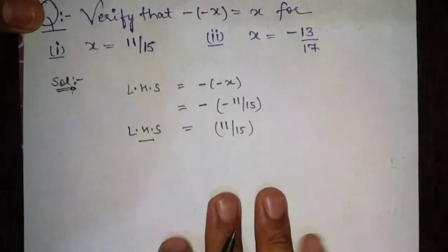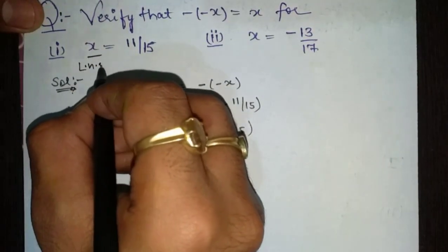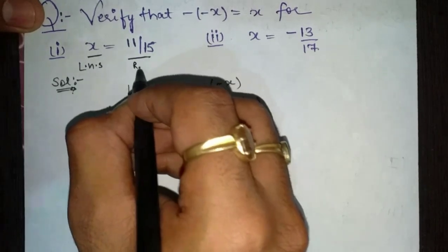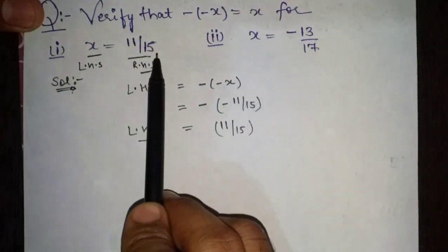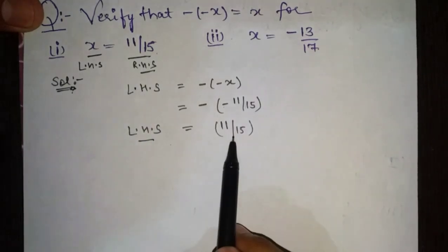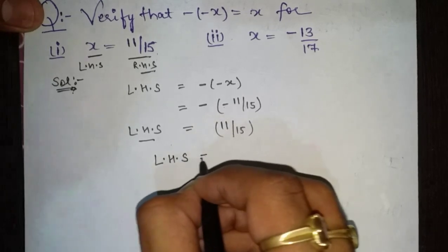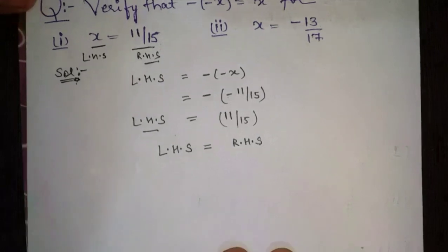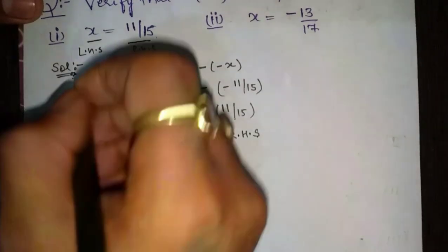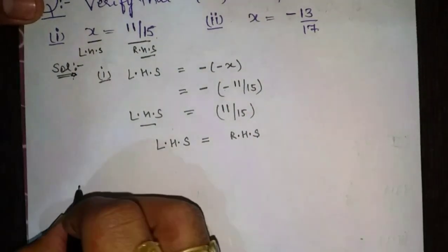What is the right hand side? The left hand side is called left hand side and the right hand side answer is 11 by 15. Left hand side is equal to 11 by 15. So left hand side is equal to right hand side. Hence the first equation is verified.